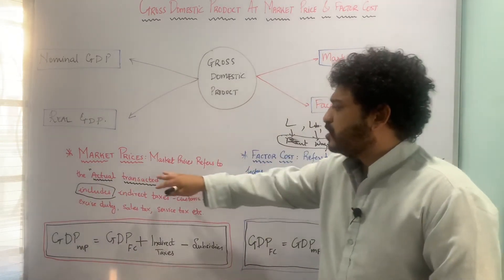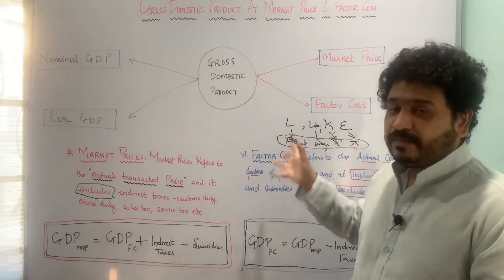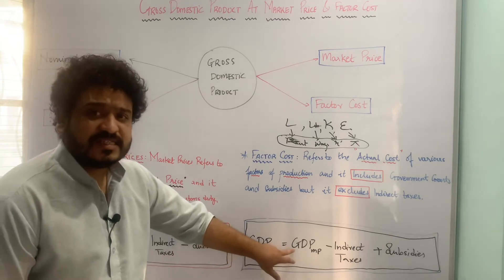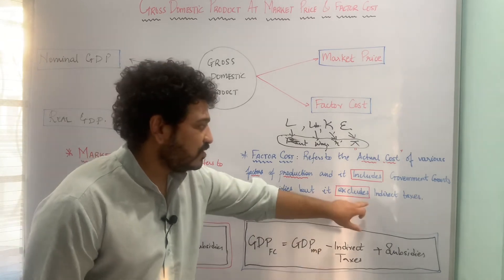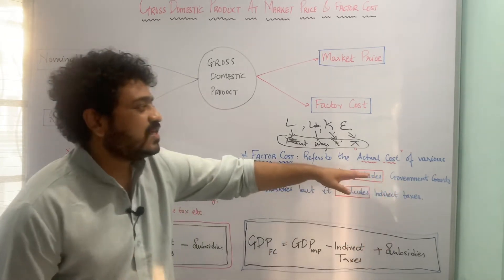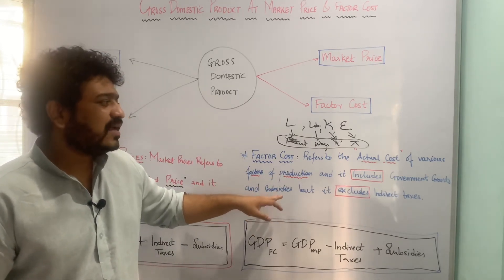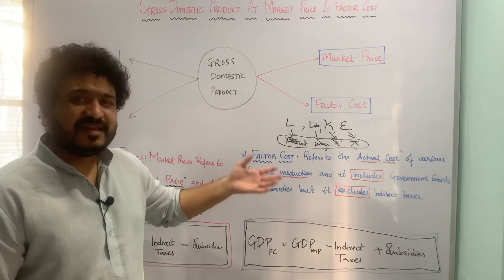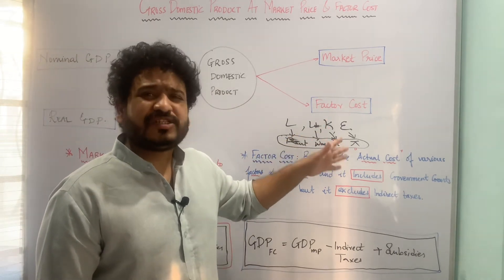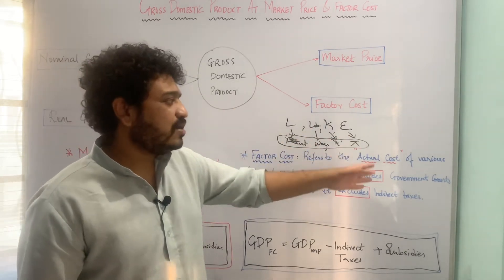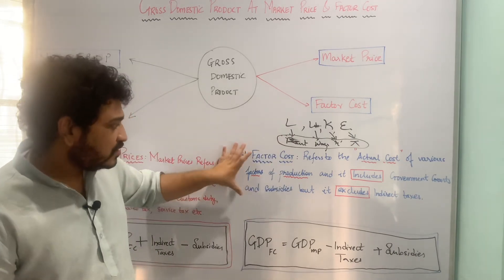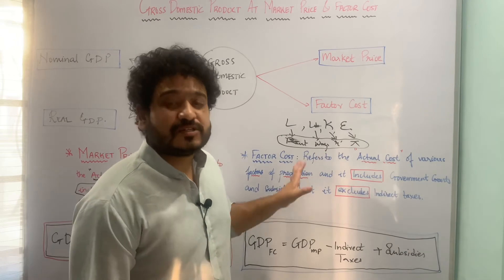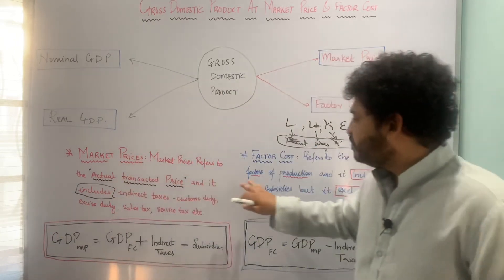To summarize the distinction: market price refers to the actual transacted price, while factor cost refers to the actual cost of the factors of production — rent, wages, interest, and profits. The formula for GDP at factor cost is: GDP at factor cost equals GDP at market price minus indirect taxes plus subsidies, i.e., government grants and subsidies.